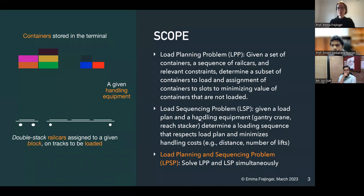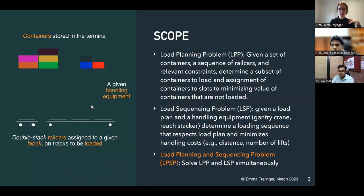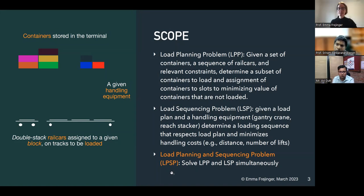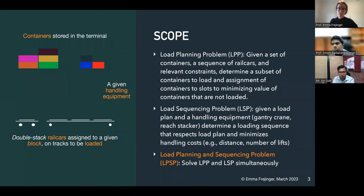We want to minimize the value of containers left behind, or equivalently maximize the usage of rail cars and the value of containers loaded. The value here could reflect specific priorities on the containers. For the load sequencing problem, or LSP, we assume the LPP is already solved — we know which container goes in which slot — and now we determine how the handling equipment should load the containers: the sequence in which we load them. The core focus of this talk is the LPSP — load planning and load sequencing problem — solving these two problems jointly rather than sequentially.